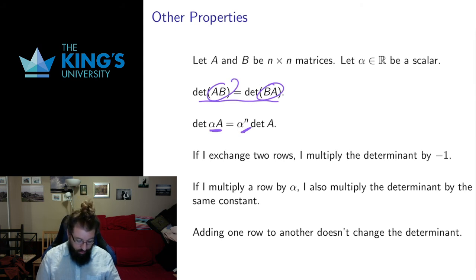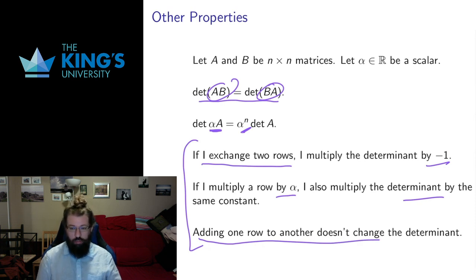And lastly, I'd like to know what the effect of the row operations is on the determinant. Because row operations are things that I do when I row reduce. If I exchange two rows, the determinant changes by negative one. If I multiply a row by a constant, I also multiply the determinant by that constant. And then the really surprising one, adding one row to another doesn't change the determinant.